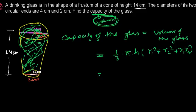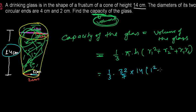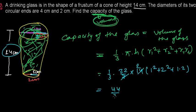Simply plugging in the values: (1/3) × (22/7) × 14 × (r1² + r2² + r1·r2). Here r1 = 1 cm and r2 = 2 cm. So we get (1/3) × (22/7) × 14, which simplifies to 44/3. Then r1² = 1, r2² = 4, and r1·r2 = 2. Adding these: 1 + 4 + 2 = 7.